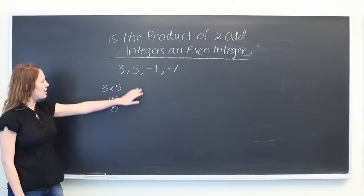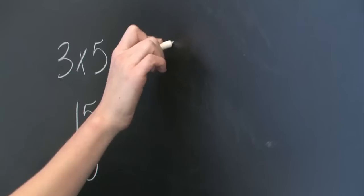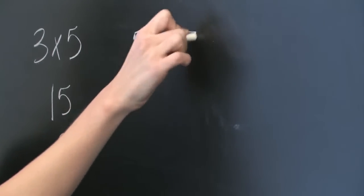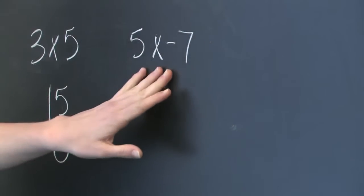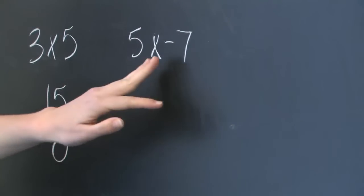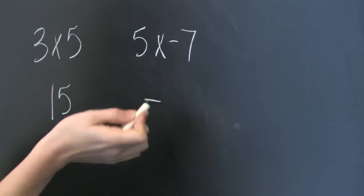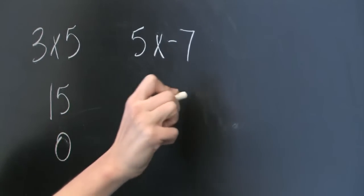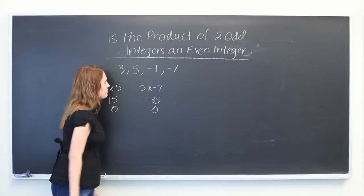Now let's try 5 times negative 7. We know that since our signs are different here, positive 5 and minus 7, the answer is going to be negative. And 5 times 7 is 35, which is an odd value.